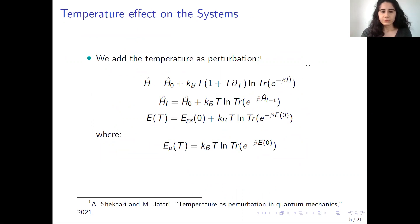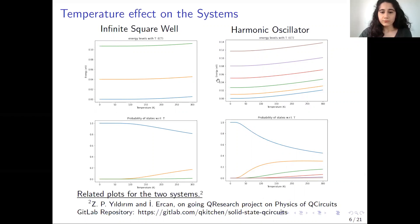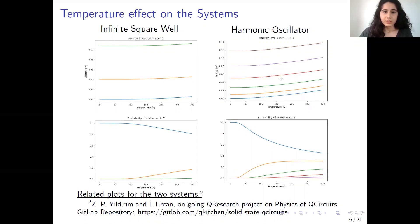Using this formulation, we can plot the energy levels in the first row — energy levels of the system with respect to temperature. Also, we can plot the occupation probability of states by using the Maxwell-Boltzmann distribution function in the second row. This will be crucial when determining operating temperatures of a superconducting qubit.